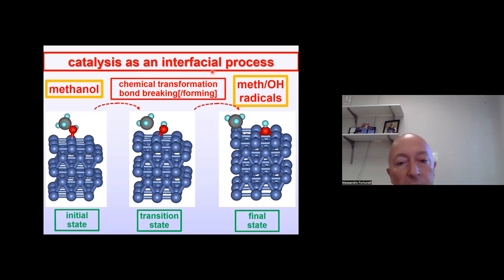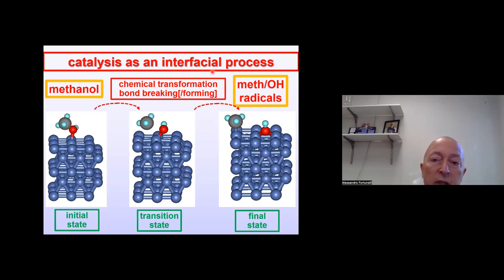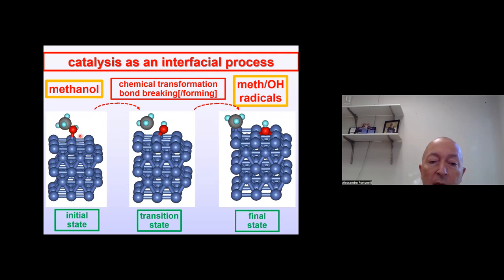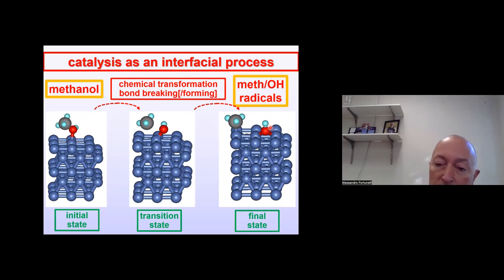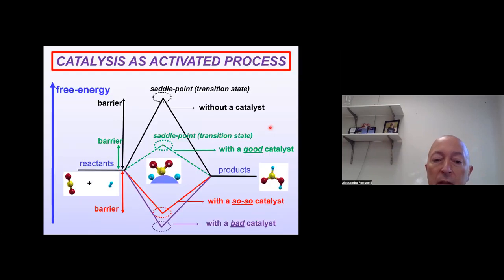Catalysis, as Anastasia mentioned, is clearly a heterogeneous and interfacial process. You have some starting species and an interface between a metal, for example, and an adsorbent. In this process you have chemical transformation with bond breaking and forming, going from methanol to radicals and so on until you transform it to CO2 and H2 or other products.